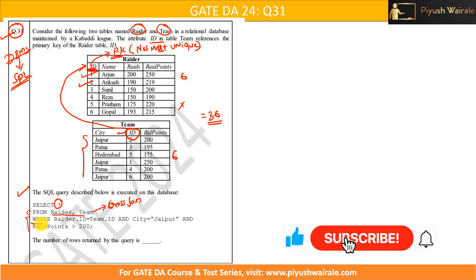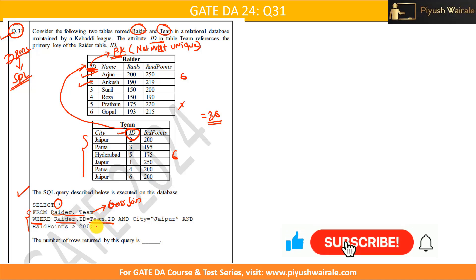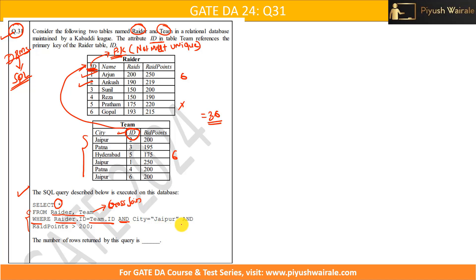Now we have the WHERE clause: WHERE rider.id = team.id. This filters the result — we are filtering the 36 rows based on this condition. Any row where rider.id equals team.id will be kept. We also have two more conditions: city equals Jaipur AND rate_points greater than 200. So there are three filtering conditions in total, and we are joining based on the common id.